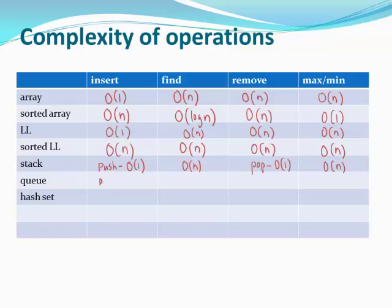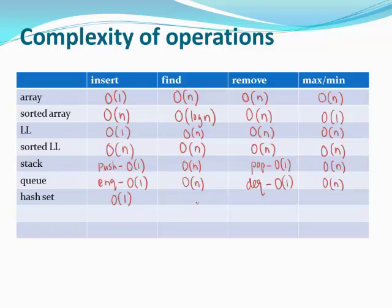For a queue, inserting means enqueuing, which is O(1). Finding something requires dequeuing all elements to look through them at O(n), then restoring the queue. Removing means dequeuing, which is O(1). Finding max or min requires traversing the entire queue at O(n). For a hash set, we have very efficient O(1) insert, find, and remove, but anything involving order statistics like max or min will cost O(n), since you must look through all elements in the table.